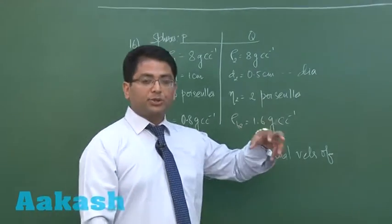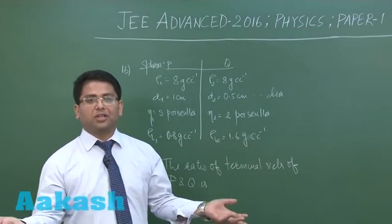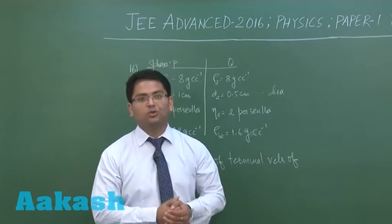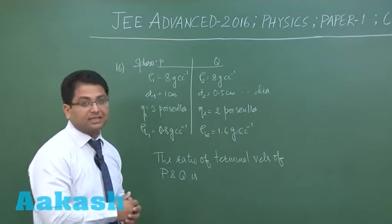So here sphere P in one liquid, sphere Q in another liquid. Of course we know a terminal velocity would soon be attained and we need to calculate the ratio of terminal velocities of P and Q.